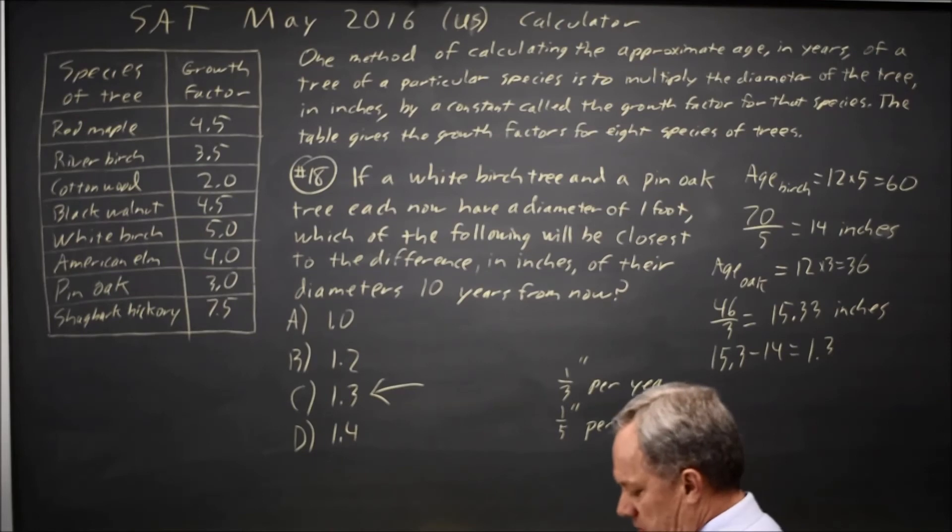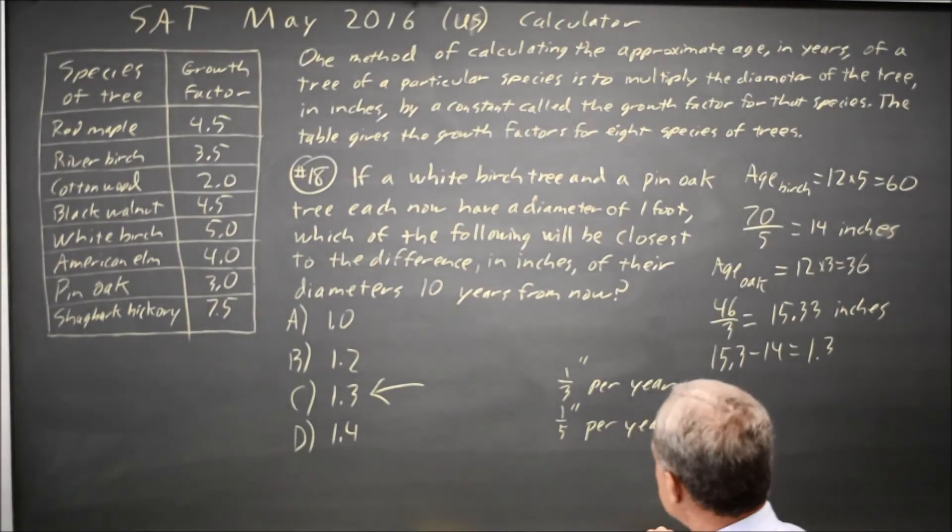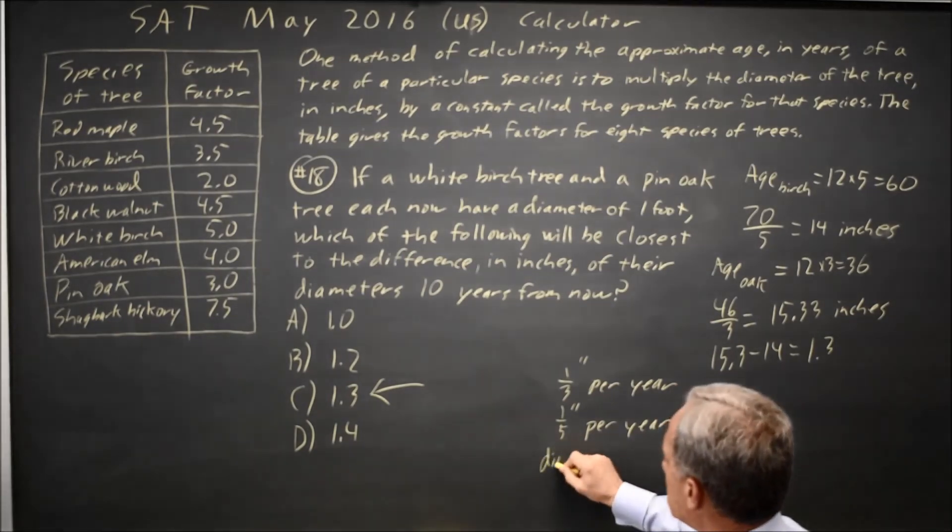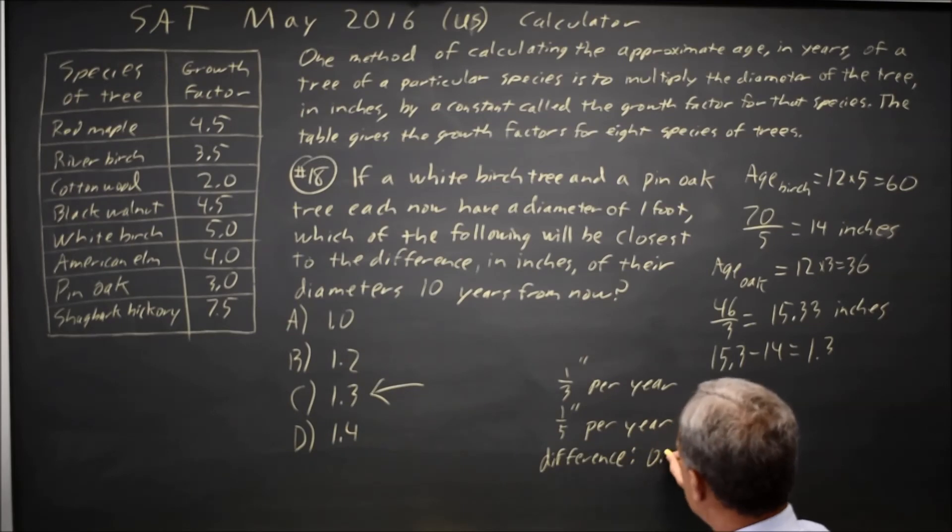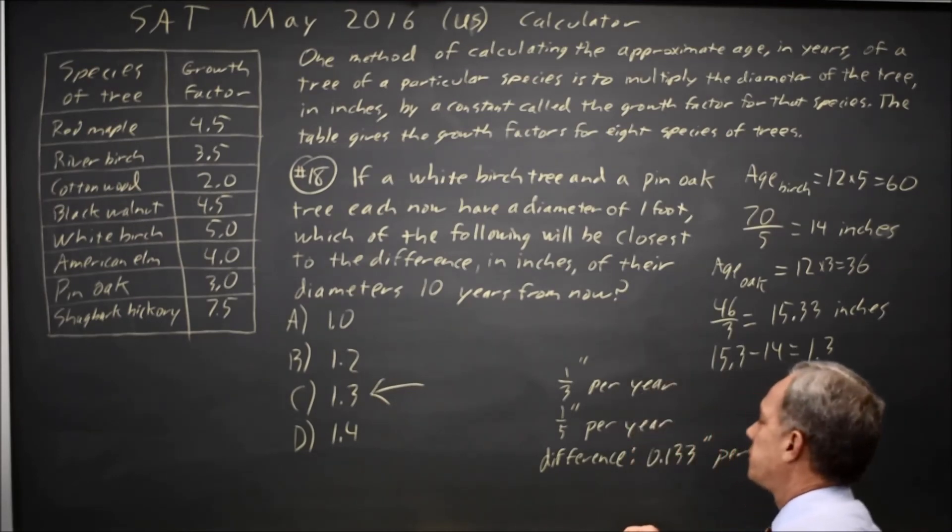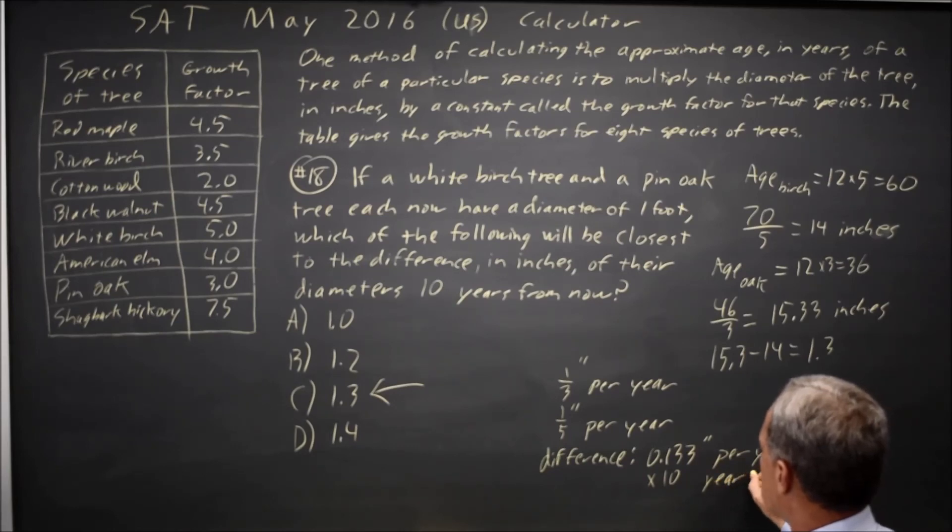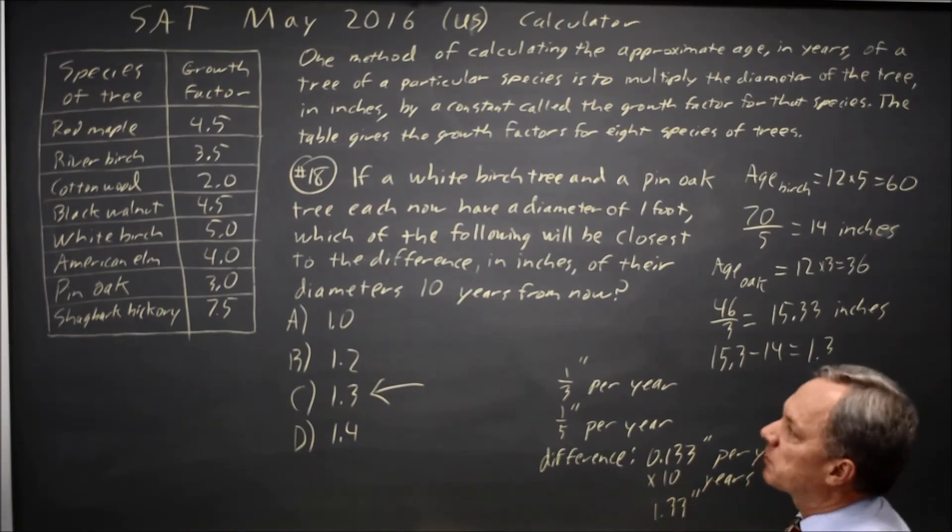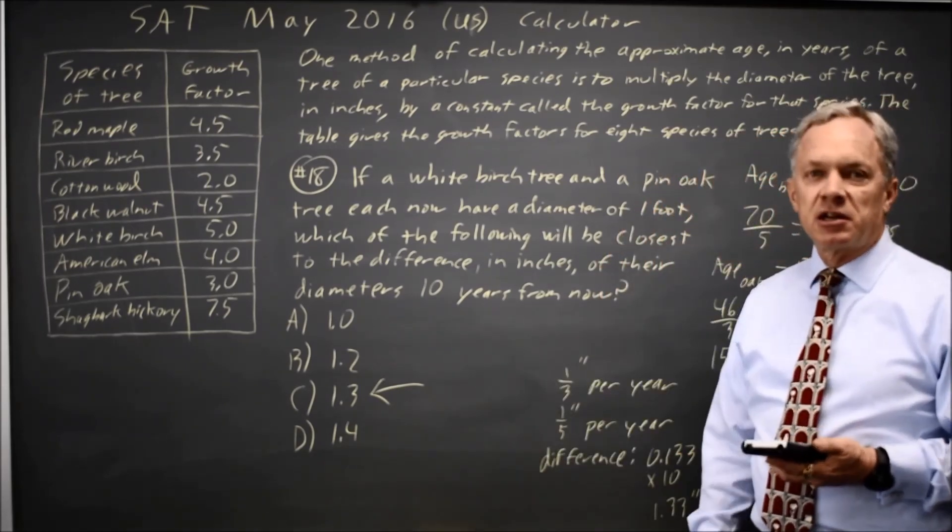And if you take one-third minus one-fifth, you get a difference of 0.133 inches per year. And if you multiply inches per year times 10 years, you get 1.33 inches, which is approximately 1.3, and they say which is closest to the difference. Again, I got choice C.